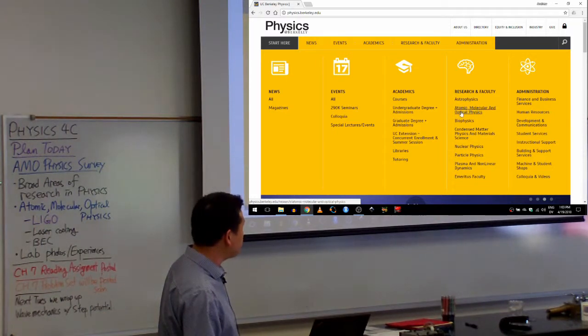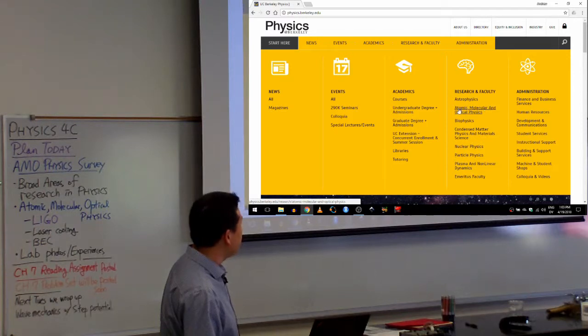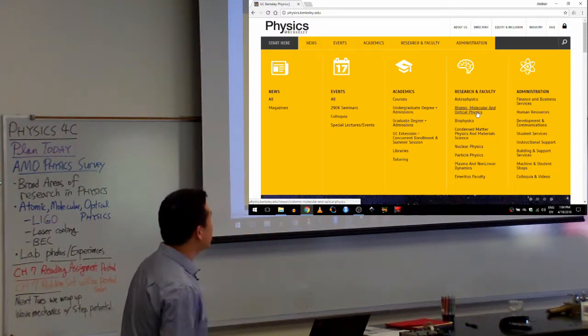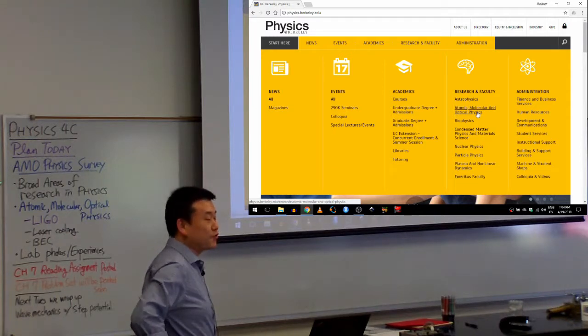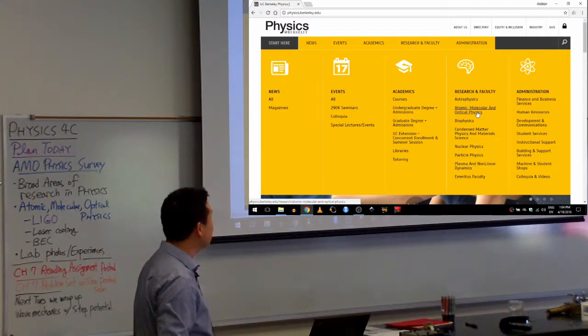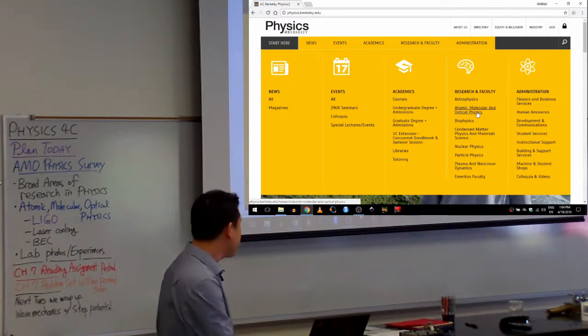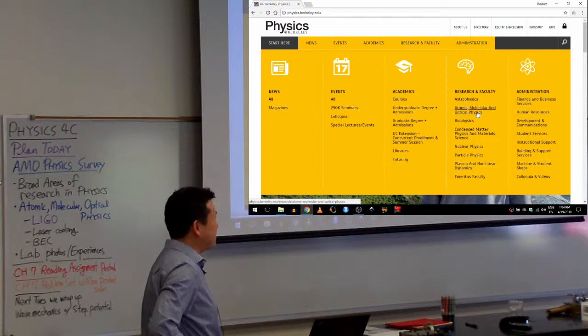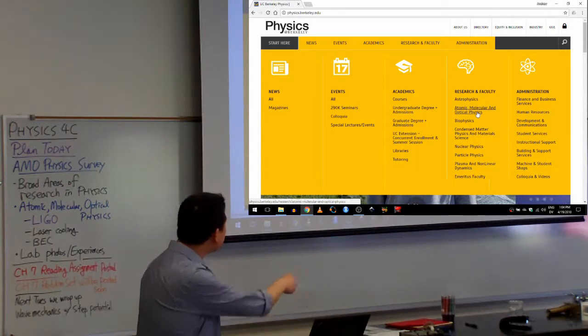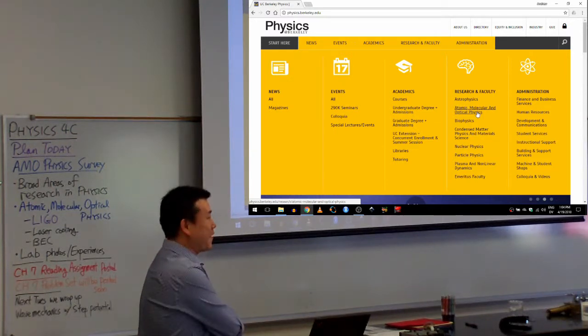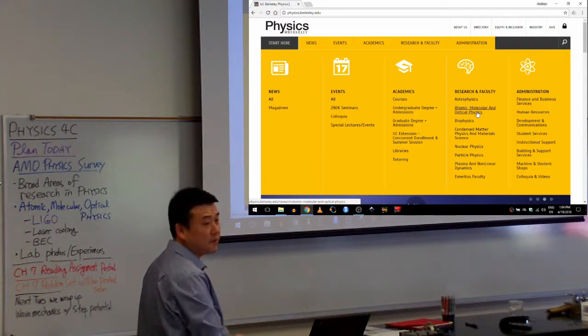We'll go more in depth into AMO physics or atomic, molecular, and optical physics. At parties, when people ask me what do you do, my one-sentence description of what I do used to be, I work with lasers. That is a good one-sentence description of what you do in AMO physics. Because when you tell people you work with atomic physics, people get a wrong impression. They think of atomic bomb, which is more nuclear physics, not atomic physics. Telling people I work with lasers actually gives a better one-sentence description of what you do in AMO physics.